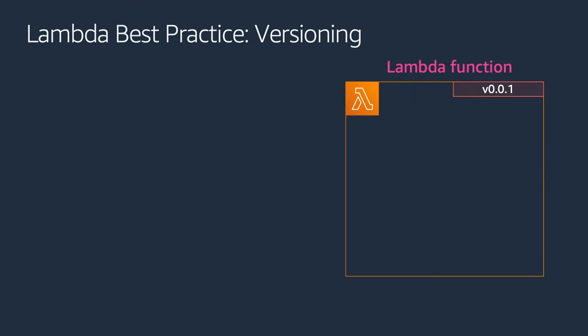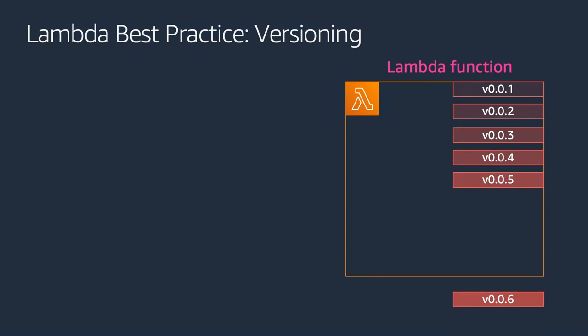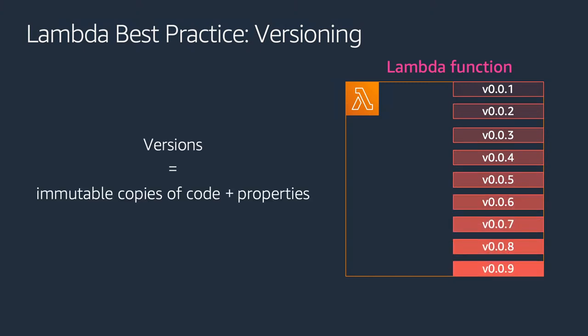Let us say you have a Lambda function at version one - your code is absolutely working fine - hooked up to your API Gateway and everything is working great. But developers are coming with new features, and more and more versions are coming into your Lambda functions. Each version in AWS Lambda is immutable. Once you publish a version, you cannot modify it. If there is a bug in version 2, the only way to fix it is by bumping up the version - it will become version 3. Version 2 code will always have the bug.